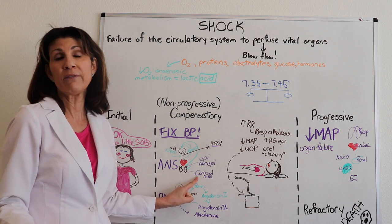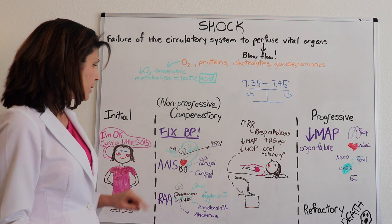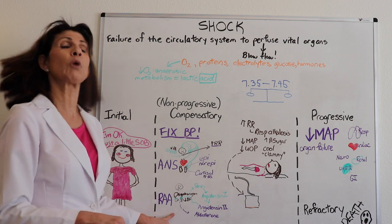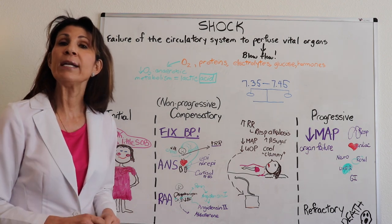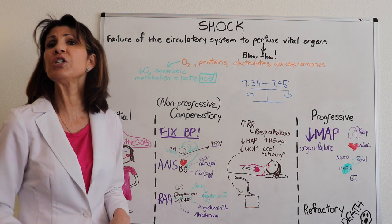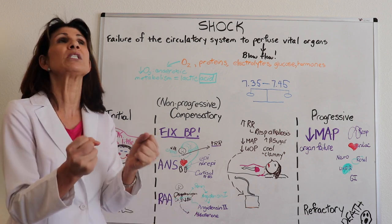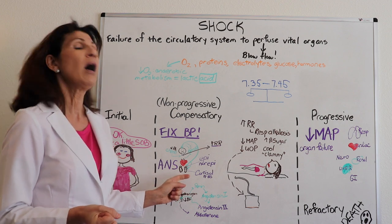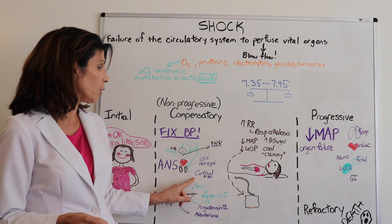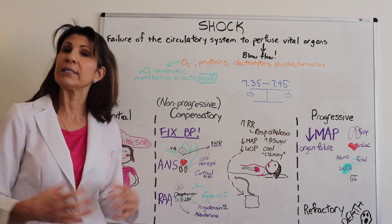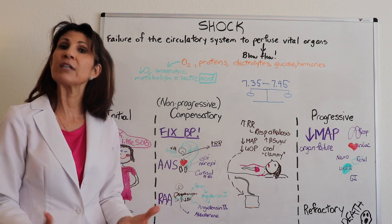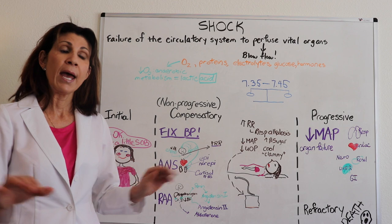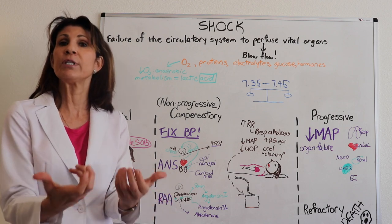The renin-angiotensin-aldosterone system also responds: the juxtaglomerular cells respond to lower pressures and release renin, which is converted to angiotensin-1, then to angiotensin-2. Angiotensin-2 is a potent vasoconstrictor and also causes the release of aldosterone from the adrenal cortex. Aldosterone helps restore intravascular volume — so not only is vascular tone restored with angiotensin-2, but also volume, as sodium with water following it re-enters the intravascular space.